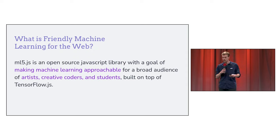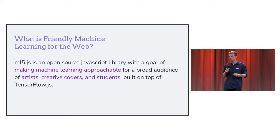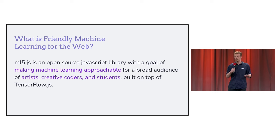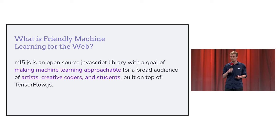So that brings us to ML5 and why is it friendly. ML5 is an open source JavaScript library with the goal of making machine learning approachable and accessible to a broad audience of artists, creative coders, and students. It is built on top of TensorFlow.js and it integrates closely with P5.js, which is a widely used creative coding framework. It's built and maintained as an open source project through a collective effort from NYU's campuses in New York and Shanghai and from creatives all around the world.